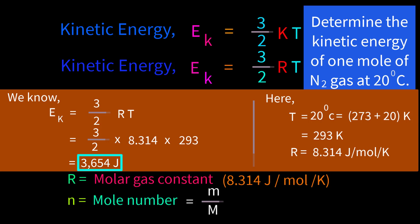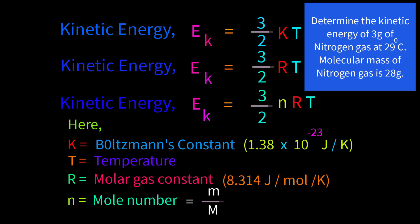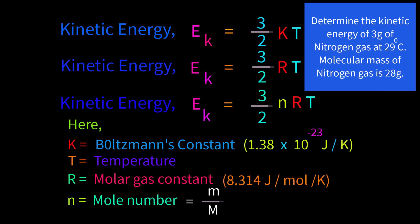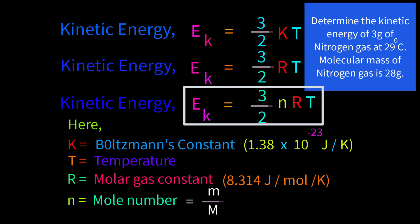Determine the kinetic energy of 3 grams of nitrogen gas at 29 degrees centigrade. The gram molecular mass of nitrogen gas is 28 grams. The mass 3 grams is the value of small m, and 28 grams is the value of capital M. We have learned that mole number small n equals small m over capital M. So the equation to apply is Ek equals 3/2 nRT.